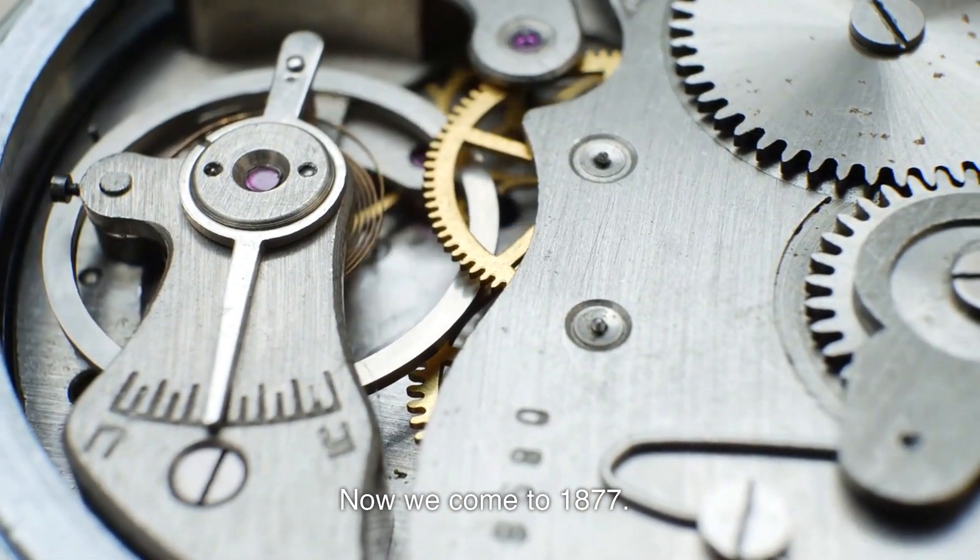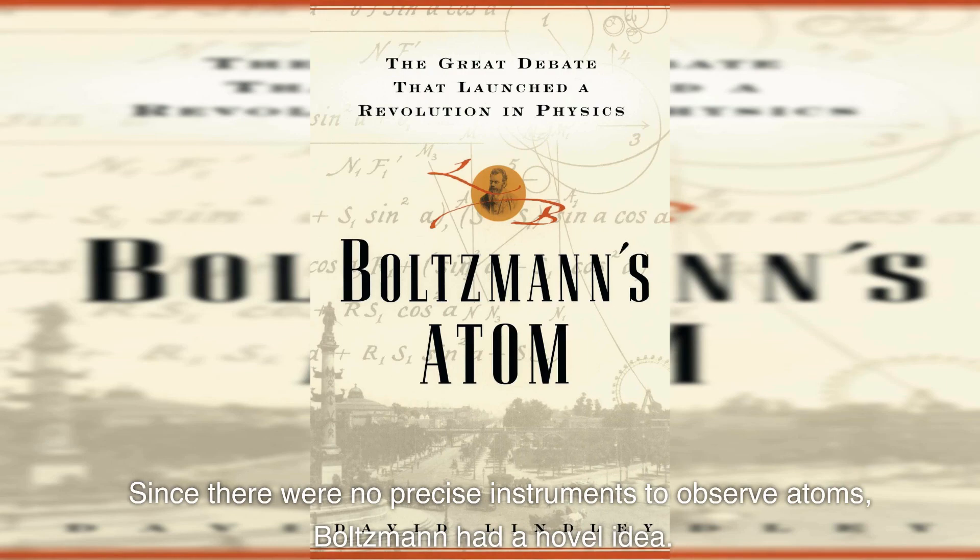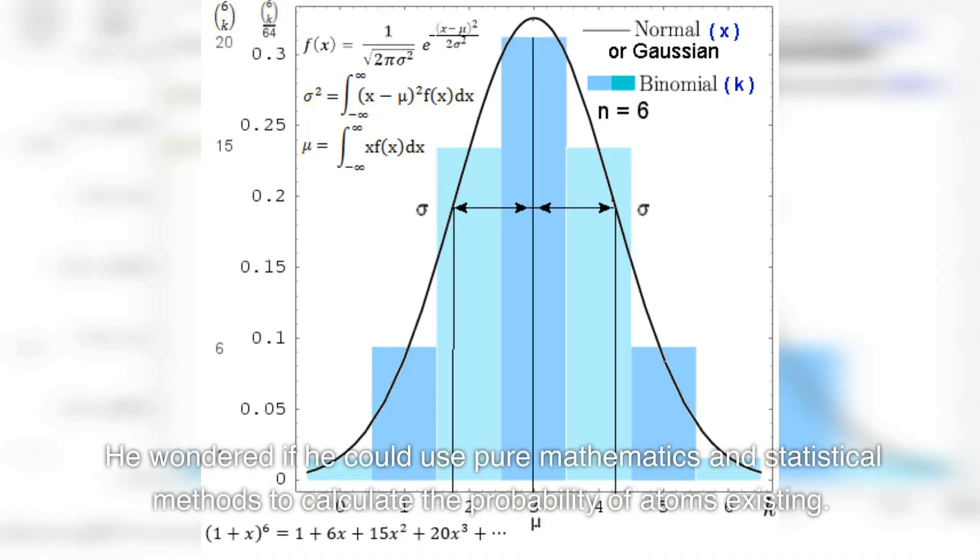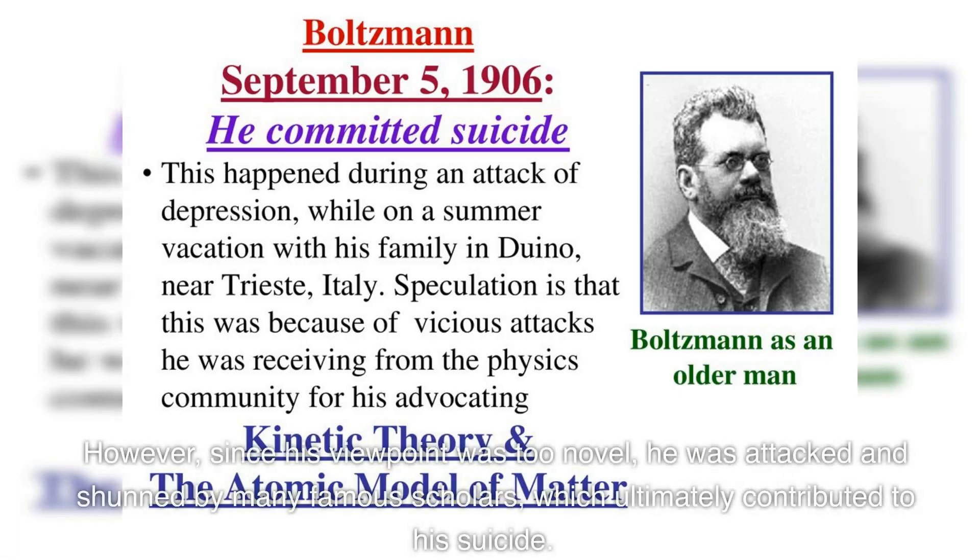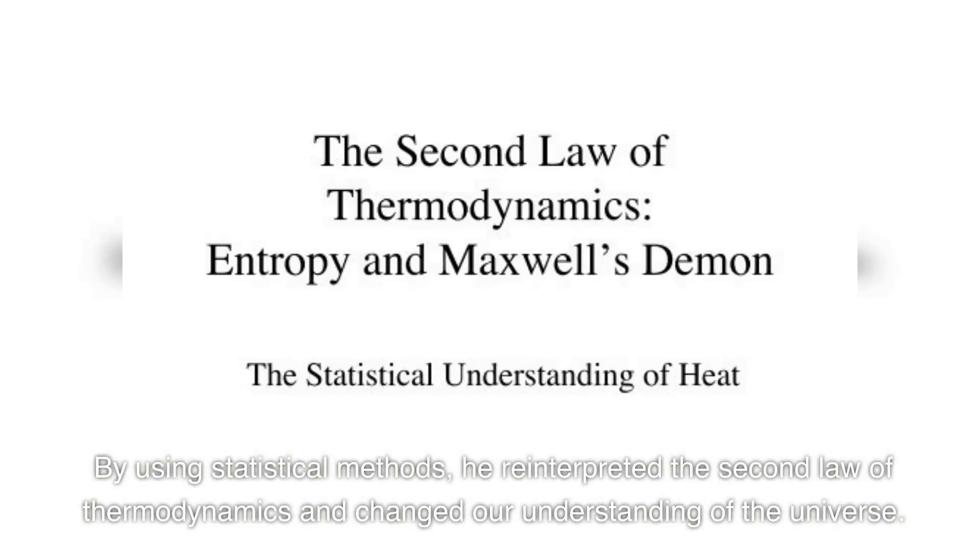Now we come to 1877. Austrian physicist Boltzmann searched for atoms, and at the time, almost all German scientists believed atoms did not exist. Since there were no precise instruments to observe atoms, Boltzmann had a novel idea. He wondered if he could use pure mathematics and statistical methods to calculate the probability of atoms existing. However, since his viewpoint was too novel, he was attacked and shunned by many famous scholars, which ultimately contributed to his suicide. This is the famous Boltzmann entropy formula, inscribed on Boltzmann's tombstone.